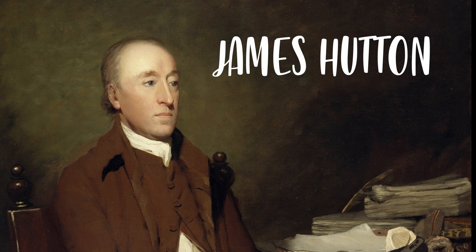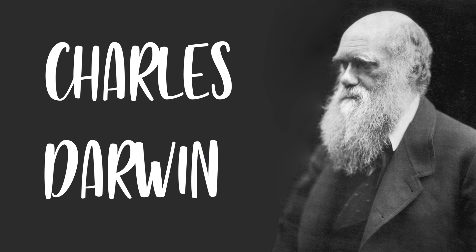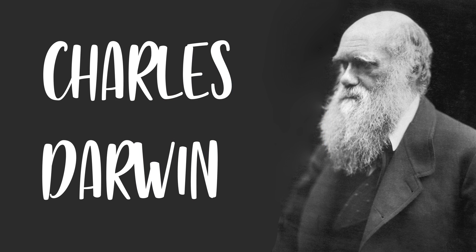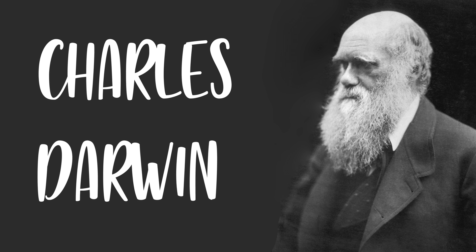However, James Hutton had proposed the rock cycle in the late 18th century, and for the cycle to work, the Earth had to be at least hundreds of millions of years old. And during the 19th century, Darwin also postulated the theory of evolution, which also required hundreds of millions of years in order for species to evolve.